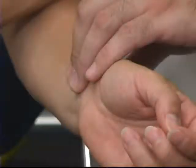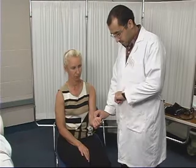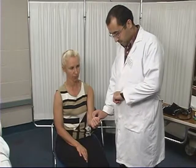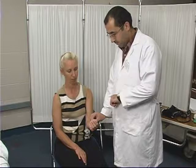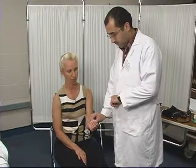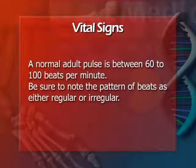To obtain the pulse of a client, locate the artery on the wrist using the pads of the middle three fingers. Count the pulse for 30 seconds, then multiply by 2. The result will be the radial pulse rate. A normal adult pulse is between 60 to 100 beats per minute. Be sure to note the pattern of beats as either irregular or regular.